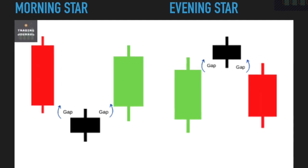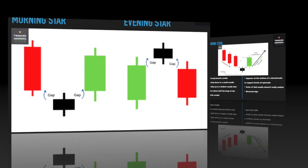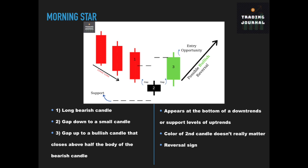Let's move to the morning and evening star. The morning star appears at the bottom of downtrends or at the support levels of uptrends. It consists of three candlesticks that begin with a bearish candle, followed by an indecision candle, followed by a bullish candle. The color of the indecision candle does not matter — it can also be a doji candle. There must be a price gap between the first and second candle, and also between the second and third candle. The third candle should close above half the body of the bearish candle. This pattern tells us that bulls are getting stronger.